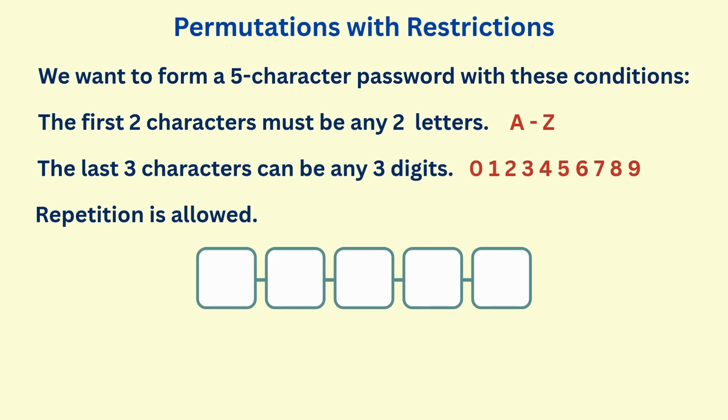There are 26 letters in the alphabet, and each of the first two boxes can have any letter, so we have 26 choices for each.